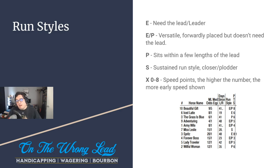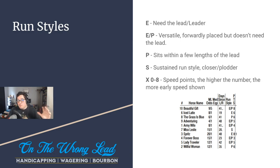The next run style — looking at the favorite in this race, the 10 Beautiful Gift — it's EP8. So it's a versatile horse, forwardly placed but doesn't need the lead. This is a horse that's probably going to be on the lead or slightly off the lead. With an eight, this horse has shown it's going to be within a length or two of the leader 99% of the time.